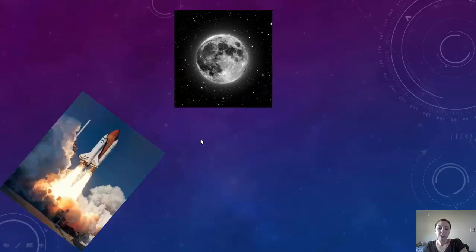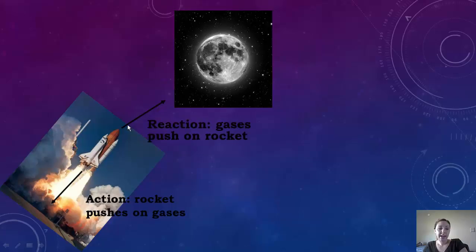Alright, so another example we can look at is when a rocket is flying to the moon. So you have the action, which is going to be the rocket that pushes on the gases, and the reaction is going to be the gases that push on the rocket. So because of this, it will propel the rocket into the atmosphere and then eventually into space.